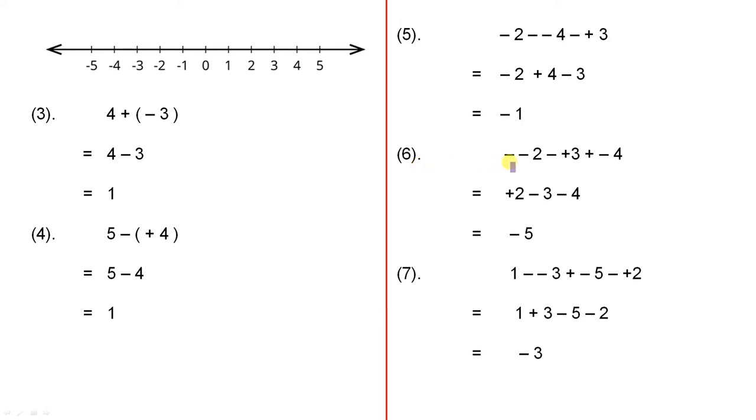Example 6. Those two translate to a plus, those two translate to a minus, and those two translate to a minus. Plus 2, minus 3, minus 4 gives us minus 5 on the number line.